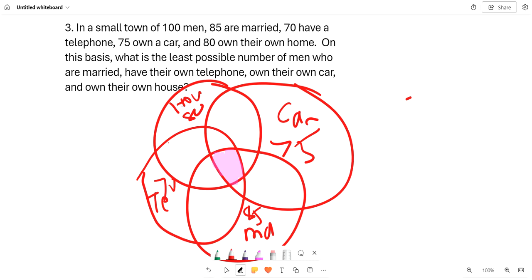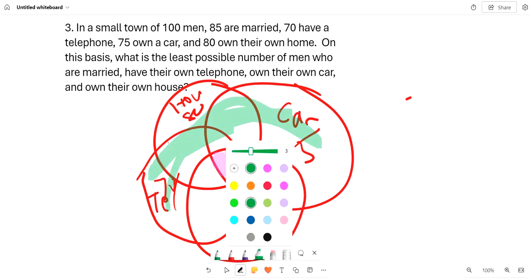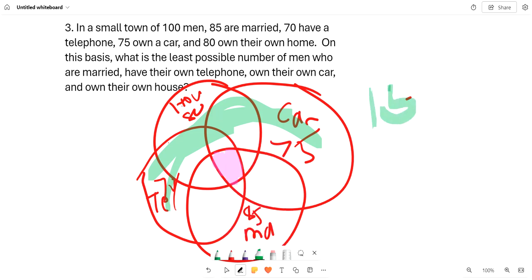And so we can start solving. Basically we know that in all of this there are 15 because there are 15 people who are not married out of the hundred.